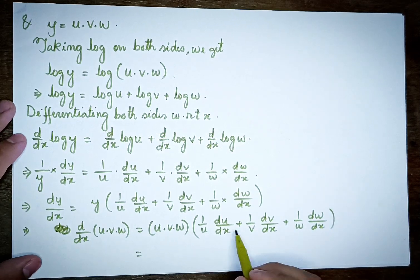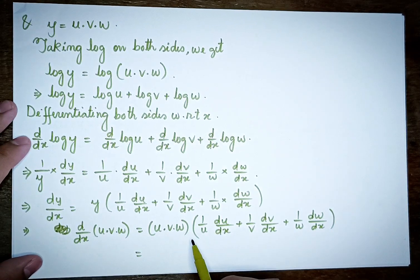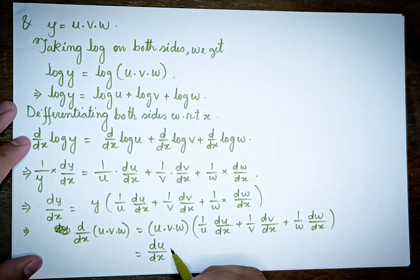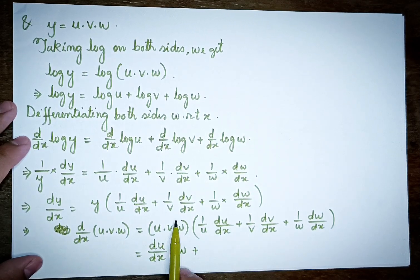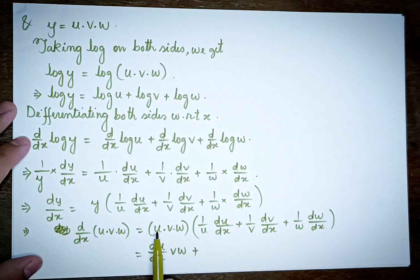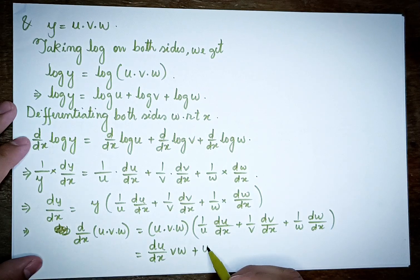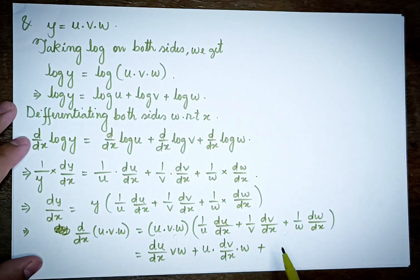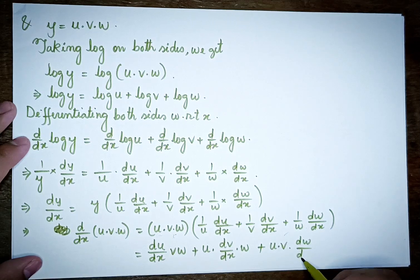Multiplying both sides by y, and substituting y equals uvw, we get dy/dx equals du/dx into vw, plus u into dv/dx into w, plus uv into dw/dx.